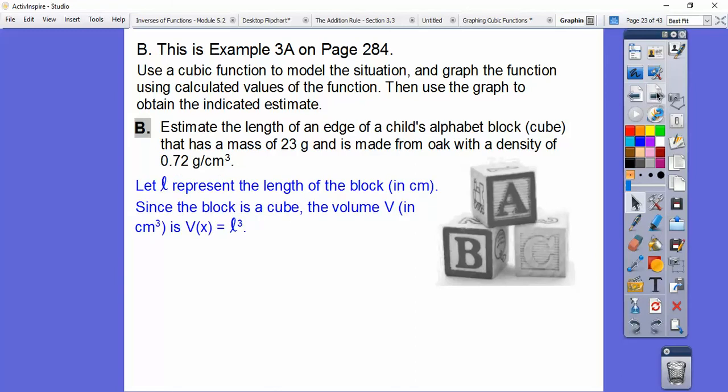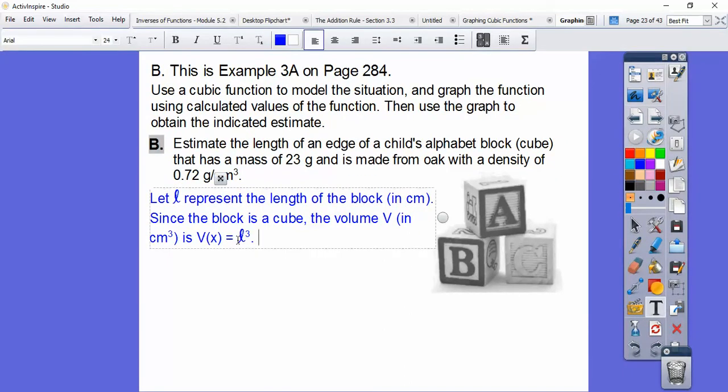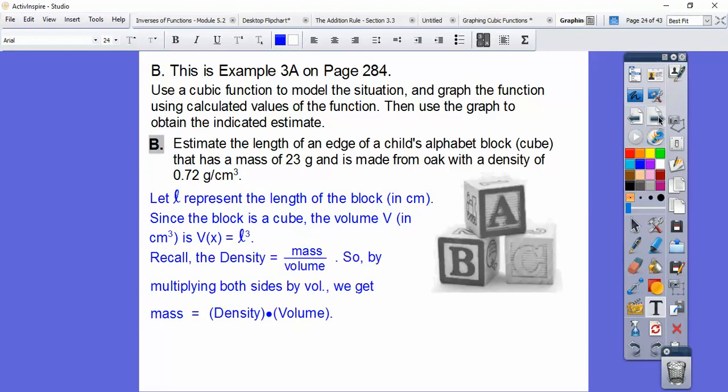Well remember our density function? Density was mass divided by volume. And we're going to insert that into this. We're looking for the length of the cube. So we'll let L represent the length of the block in centimeters. And since the block is a cube, then the volume - and this should say V(L), this should be an L inside of there. I goofed and forgot to fix that. So the V(L), I'll have it fixed for the rest of them, is L cubed.